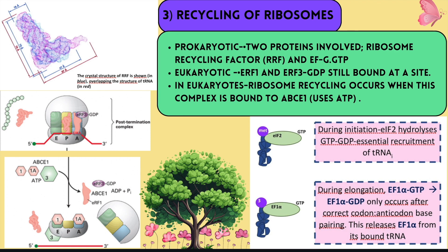The last step is recycling of ribosomes, which is essential for efficient translation. After polypeptide chain release, the ribosome is still bound to the mRNA and tRNA. In prokaryotes, two proteins are involved: Ribosome Recycling Factor (RRF) and EF-G-GTP. RRF is a mimic of tRNA. RRF recruits EF-G-GTP; GTP hydrolysis releases tRNAs from the P and E sites. IF3 assists dissociation of the small and large ribosome subunits. In eukaryotes, eRF1 and eRF3-GDP are still bound at the A-site; ribosome recycling occurs when this complex binds ABCE1, which uses ATP to separate the subunits. eIF1, eIF1A, and eIF3 help dissociation and load onto the small subunit, ready for the next round of translation.